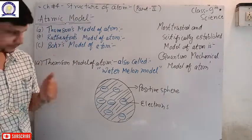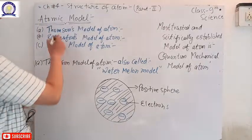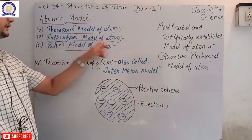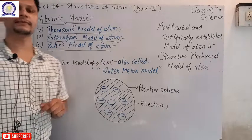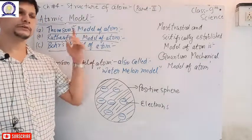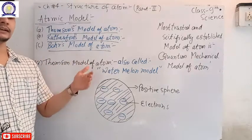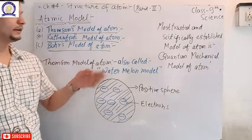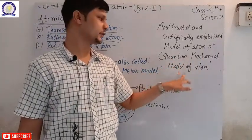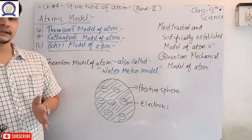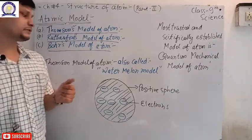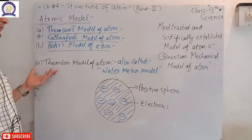We have seen atomic models. As discussed in the first video, there are three models: Thomson's model of atom, Rutherford's model of atom, and Bohr's model of atom. Today we will explain each model, starting with Thomson's model of atoms.